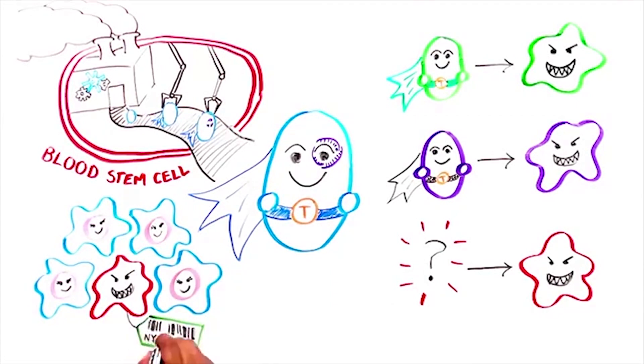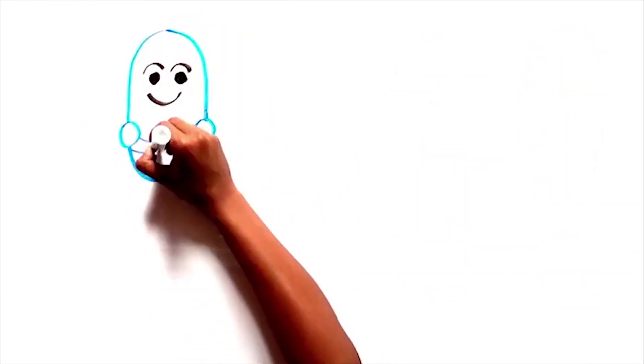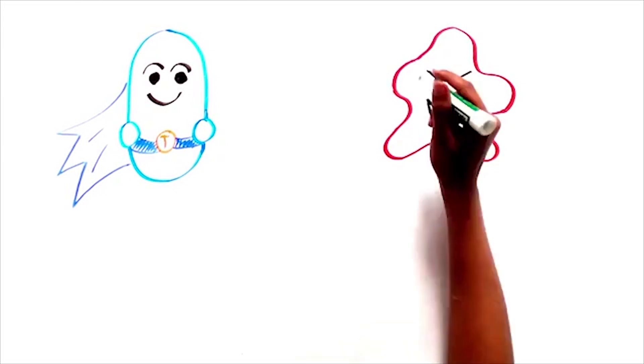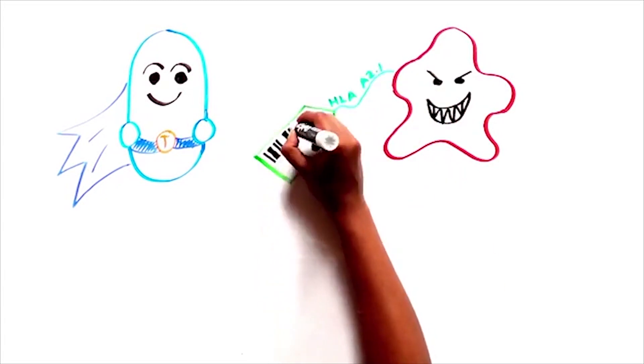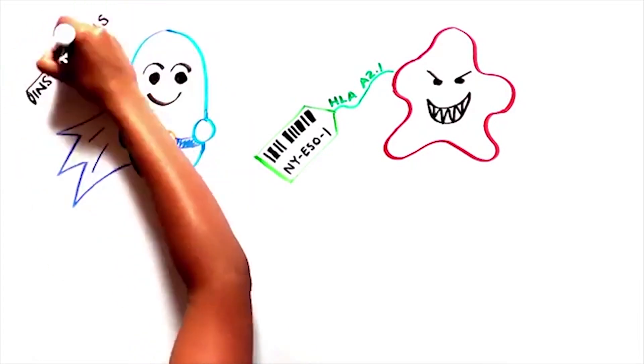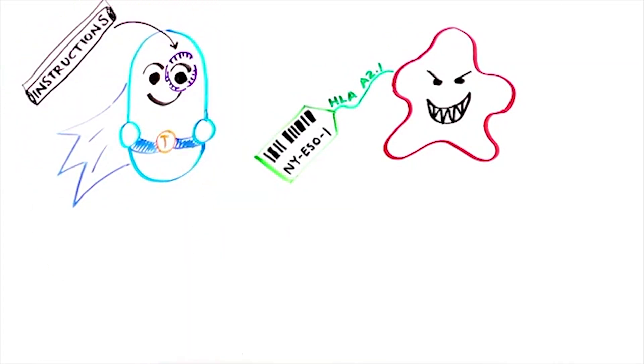One of these tags is called NYESO1. The therapy we will be describing is specifically designed for patients whose cancer cells have this tag. The goal of this therapy is to modify the patient's own immune cells and blood stem cells to recognize and eliminate cancer cells by targeting the NYESO1 tag. We will give the patient cells specific instructions on how to detect and destroy these cancer cells.